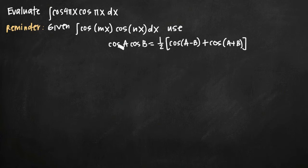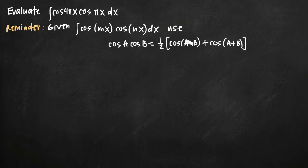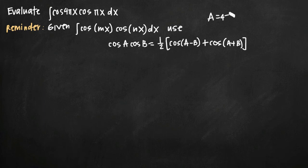The first thing we need to do is identify values of a and b. Our integral is the product of two cosine functions, just like the identity. We could have this written as cosine of πx times cosine of 4πx — the order doesn't matter. The trick for picking a and b is to recognize that we have cosine of (a minus b), so we want a to be the larger value and b the smaller. So we set a equal to 4πx and b equal to πx, so that subtracting b from a gives a positive value — it's just a bit cleaner.